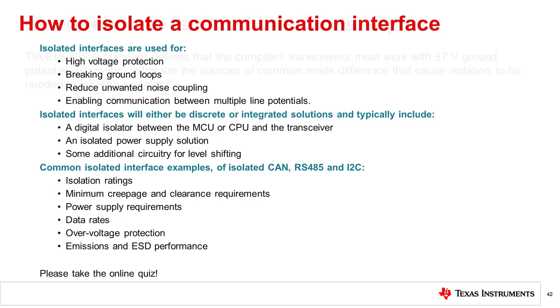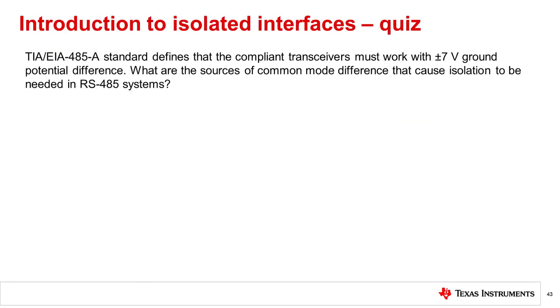Please continue watching to take the online quiz. The TIA/EIA-485A standard defines that the compliant transceivers must work with plus or minus 7 volt ground potential difference. What are the sources of common mode difference that cause isolation to be needed in RS-485 interfaces?